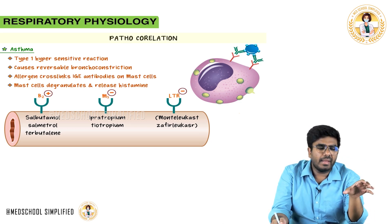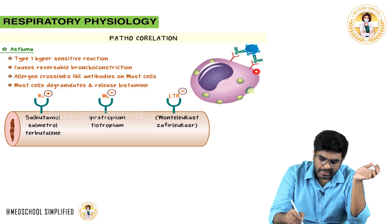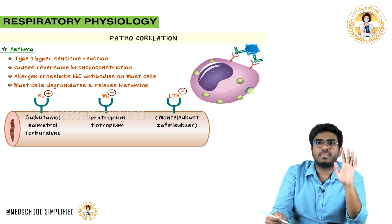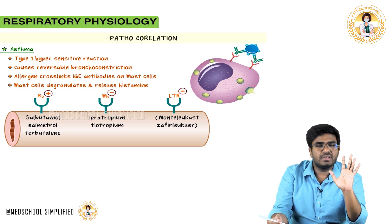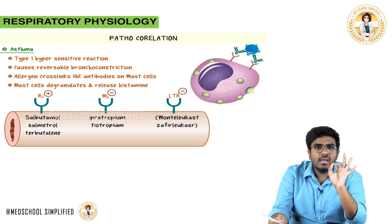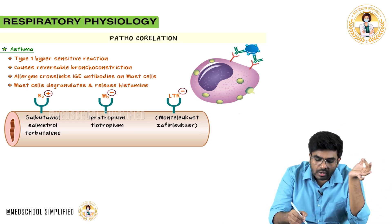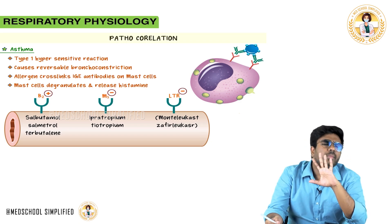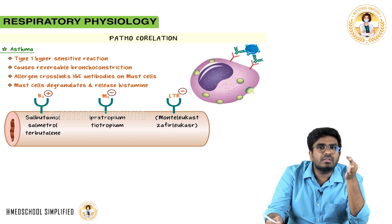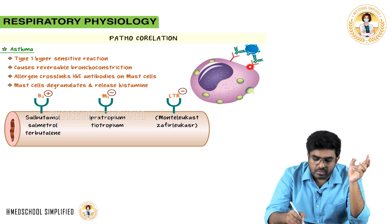In the bronchial tree there are mast cells present, and on the surface of mast cells there are IgE antibodies. When dust particles or pollen enter the respiratory tract for the first time, antibodies are produced against them and these antibodies become situated on the surface of mast cells in the connective tissue of the bronchial tree.